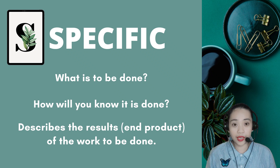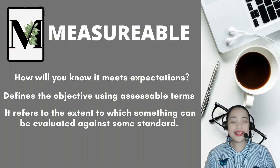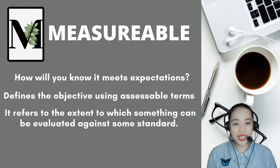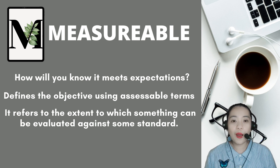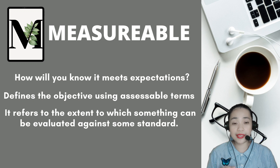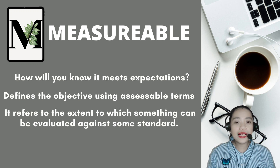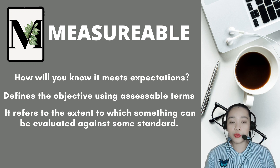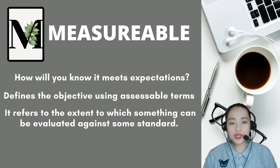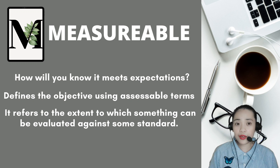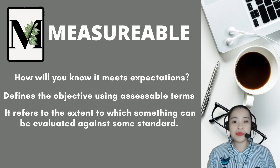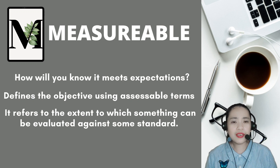Second, we have MEASURABLE. It answers the question: how will you know it meets expectations? It defines the objective using accessible terms — quantity, quality, frequency, cost, deadlines, etc. Measurable refers to the extent to which something can be evaluated against some standard. An objective with a quality measurement uses terms of amount or percentages. A frequency measurement could be daily, weekly, or once in a term. A quality measurement would describe a requirement in terms of accuracy, format, or within the guidelines.